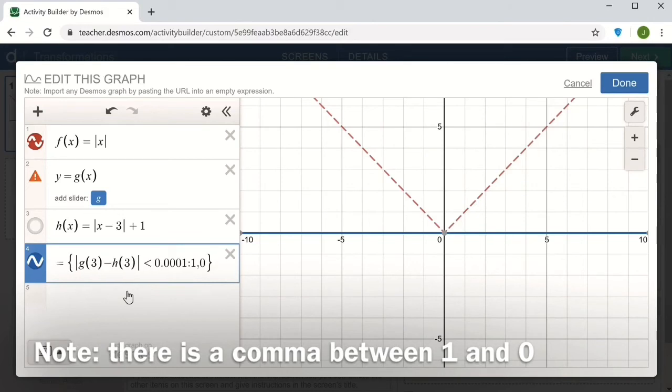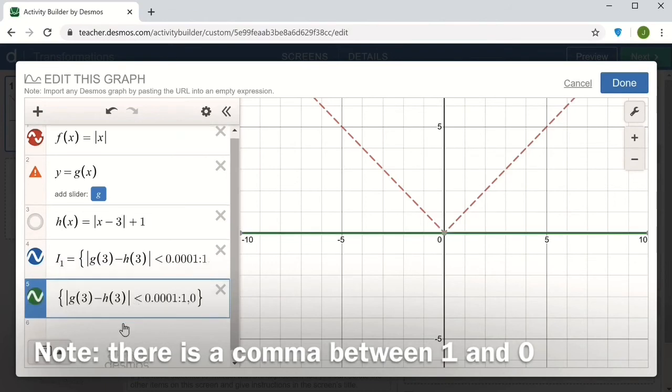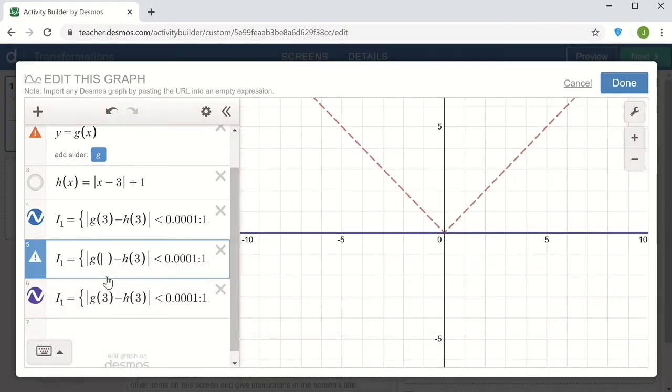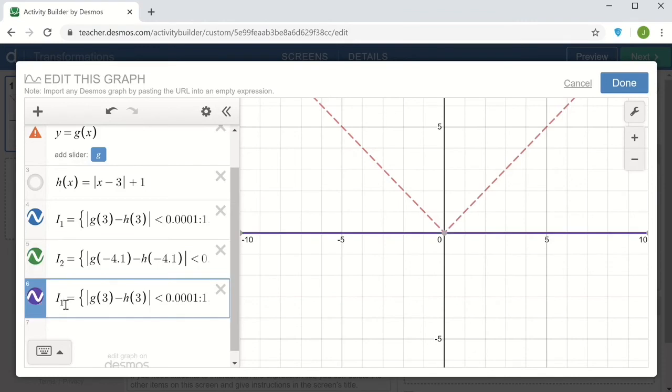And now this just tests and compares the functions at that one point. It's not a guarantee that the student's input is correct, but what I can do is copy this and repeat it for different input values. Let's say negative 4.1 for both of those, negative 4.1 would be another point that I would check. Let me call that i sub 2. And then for i sub 3, how about 3.14. And so in these three places, I'm comparing the h of x graph and the g of x graph. And if they're the same, it's a pretty good indication that the student's input is the correct one.